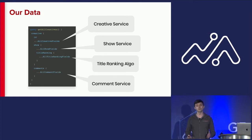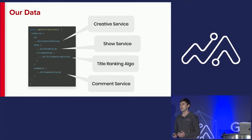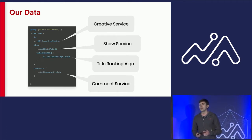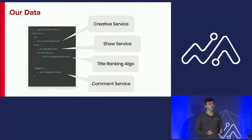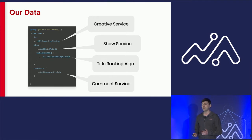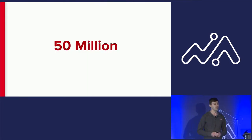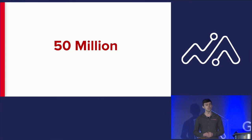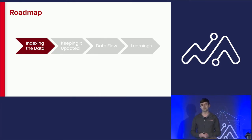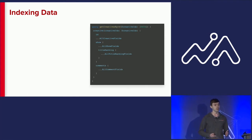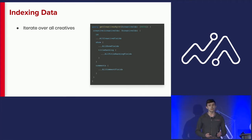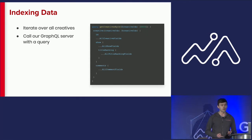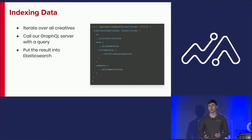Despite all this data coming from many sources, GraphQL makes it very easy to pull together all this data for a single creative. But we have quite a few — if we build only a few variations for each show, country, and language, we'd have over 50 million total creative variations. We need a proper search to be able to keep track of all this data. Because we use GraphQL, we can simply iterate over all the creatives in our database, call GraphQL to get the necessary data for each, and put the results into Elasticsearch.